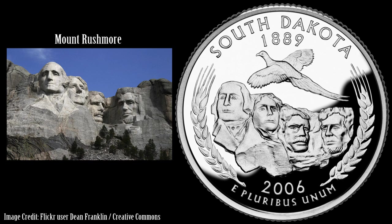While South Dakota has the second highest proportion of Native Americans of any state, the quarter features three items related to European settlement: Mount Rushmore, which was carved into the sacred Black Hills of the Lakota; a pheasant, which is an exotic species originally from Asia and introduced to North America in 1881; and wheat, which has replaced tens of thousands of square miles of native grasslands.